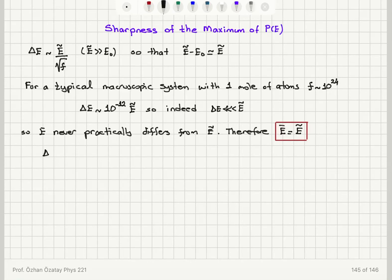delta E divided by E tilde, this will be proportional to 1 over square root f. So if I have a relative magnitude of fluctuations, again,